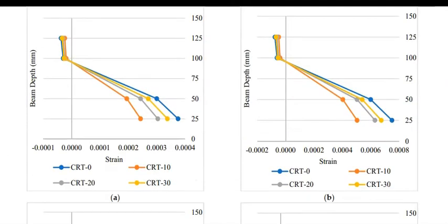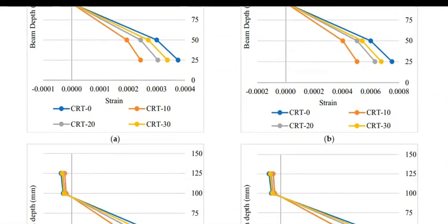Similarly, the tensile strength at 10% CRT replacement level was the highest. This is also true for the modulus of elasticity, where an increase of about 12% was noticed at 10% CRT substitution level.